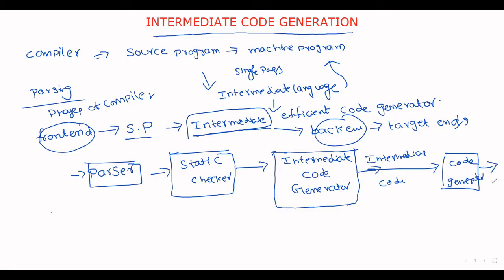Before this step we have some phases, and after this we have some phases. Generally, this part is the front end and this is the back end. The front end generates the intermediate code, which is taken by the back end to generate the efficient target code.